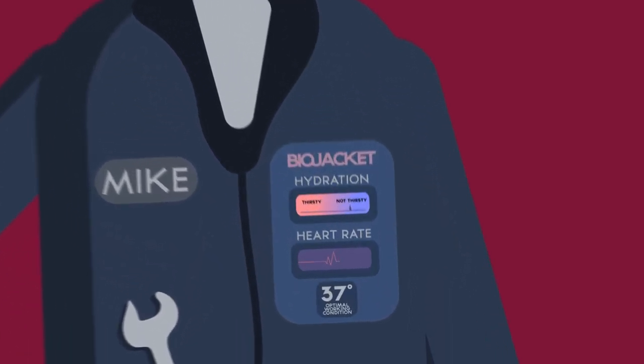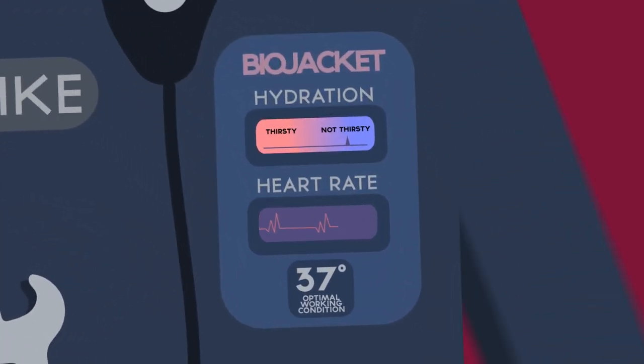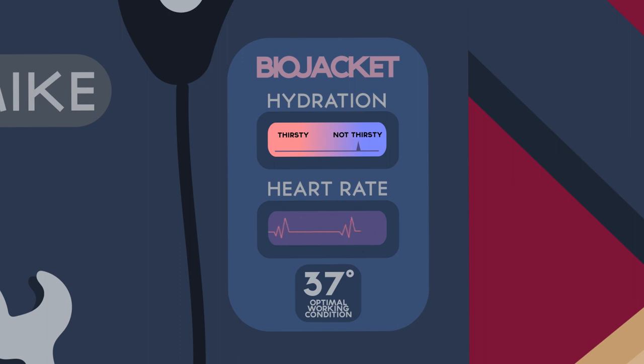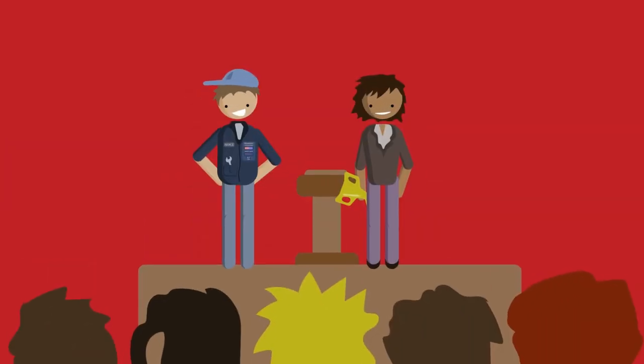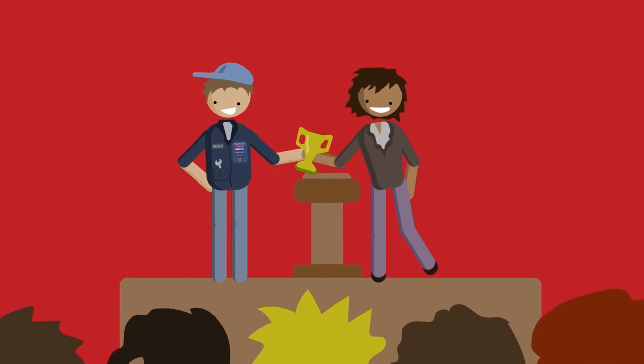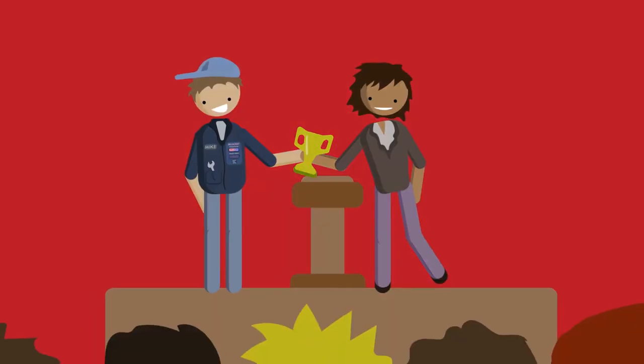Wearing the latest biometric jacket, his hydration levels, body temperature, and heart rate are monitored, which is useful as he's rewarded by his employer if he maintains his hydration level, as it's shown to reduce sick leave.